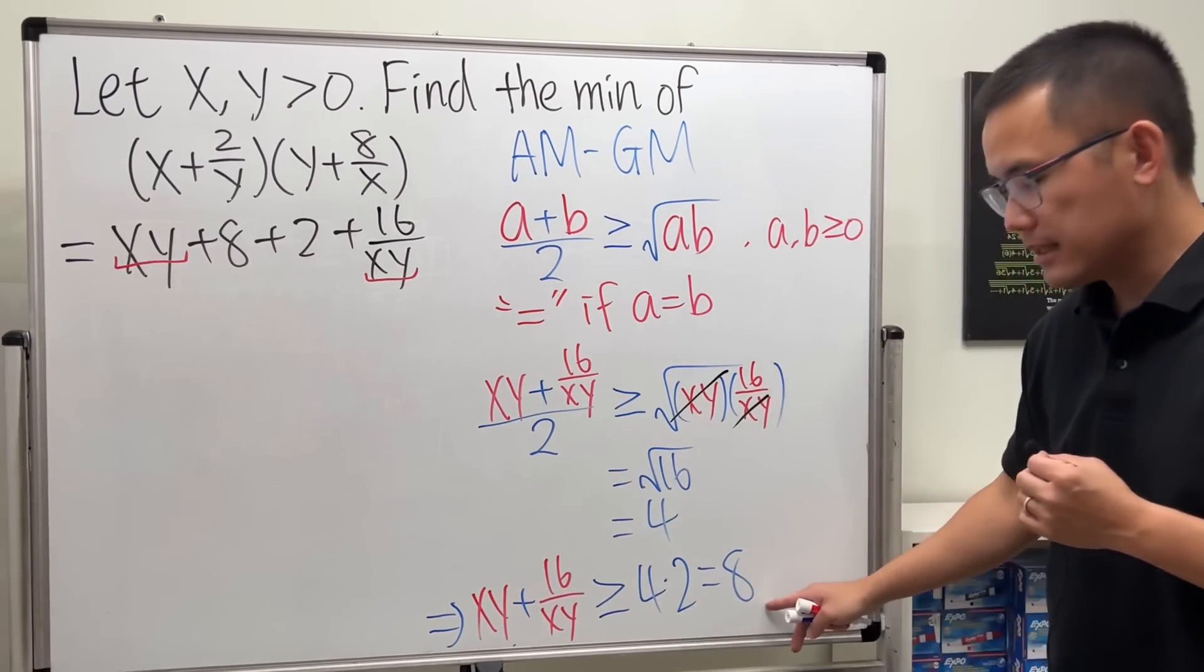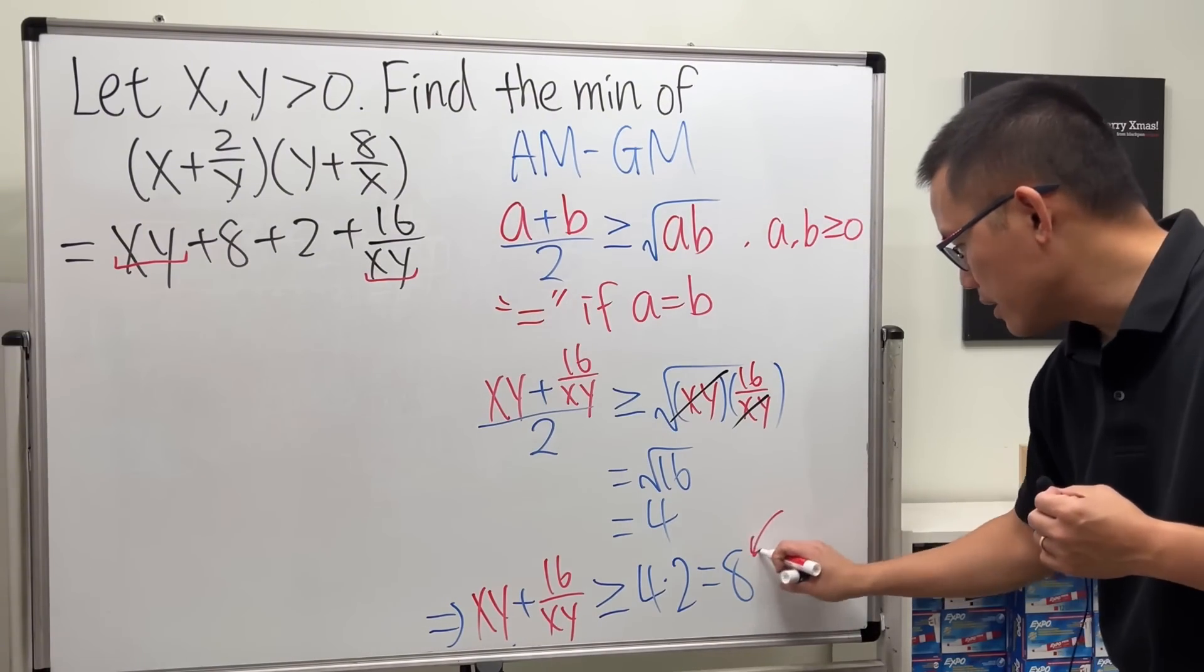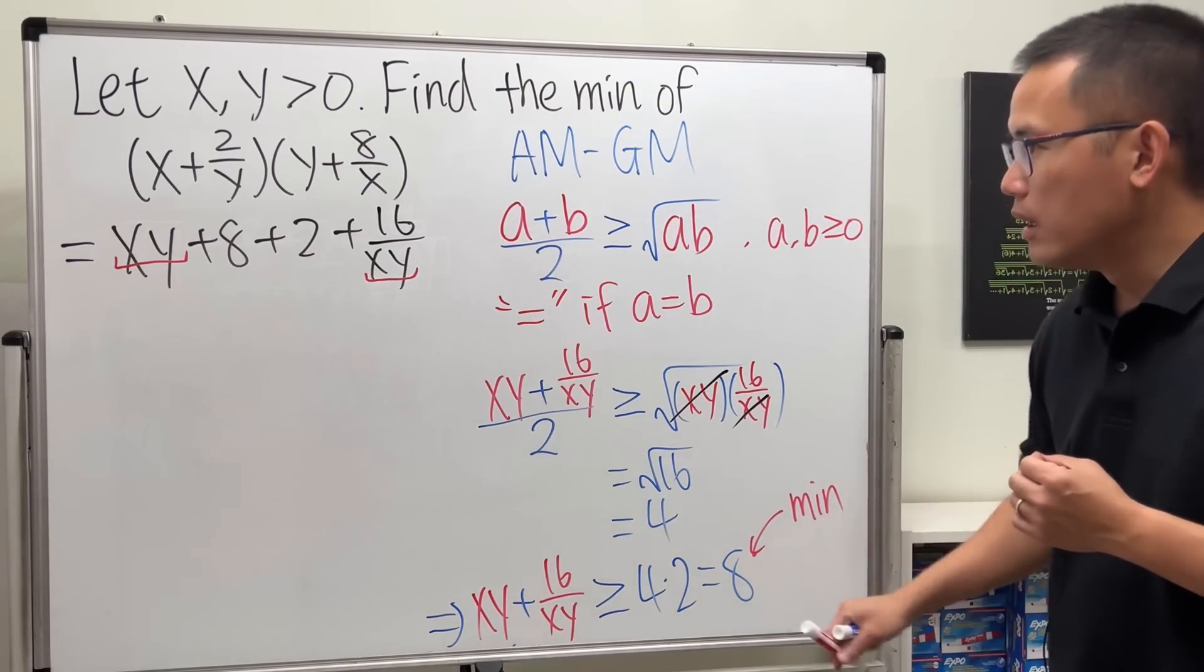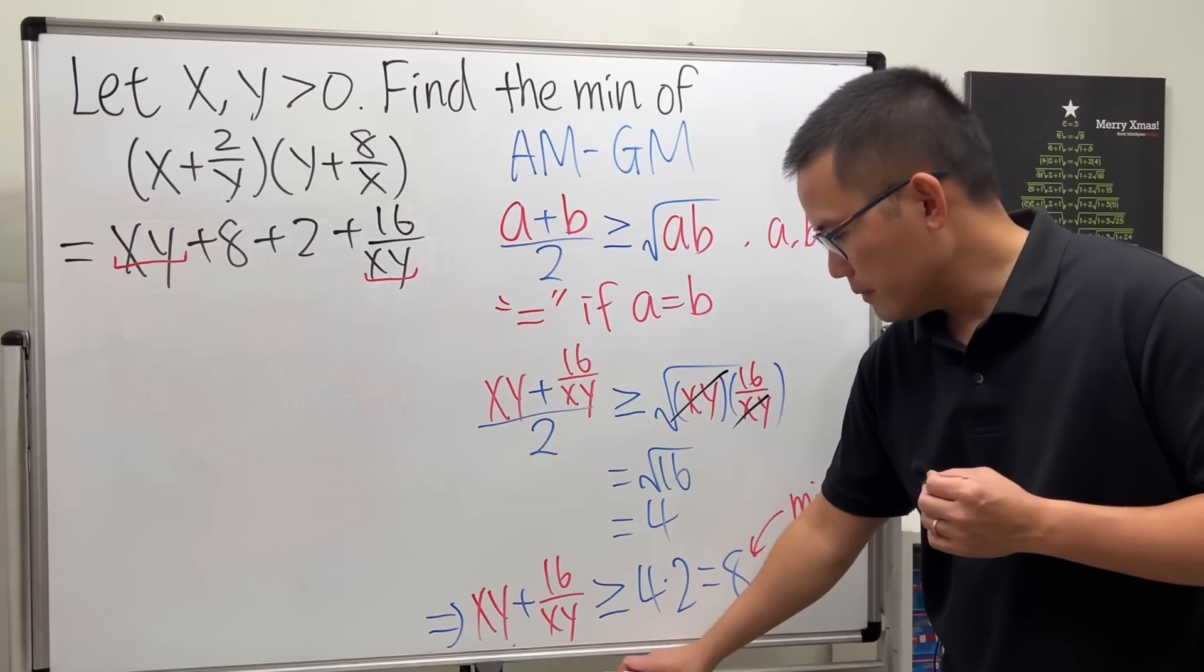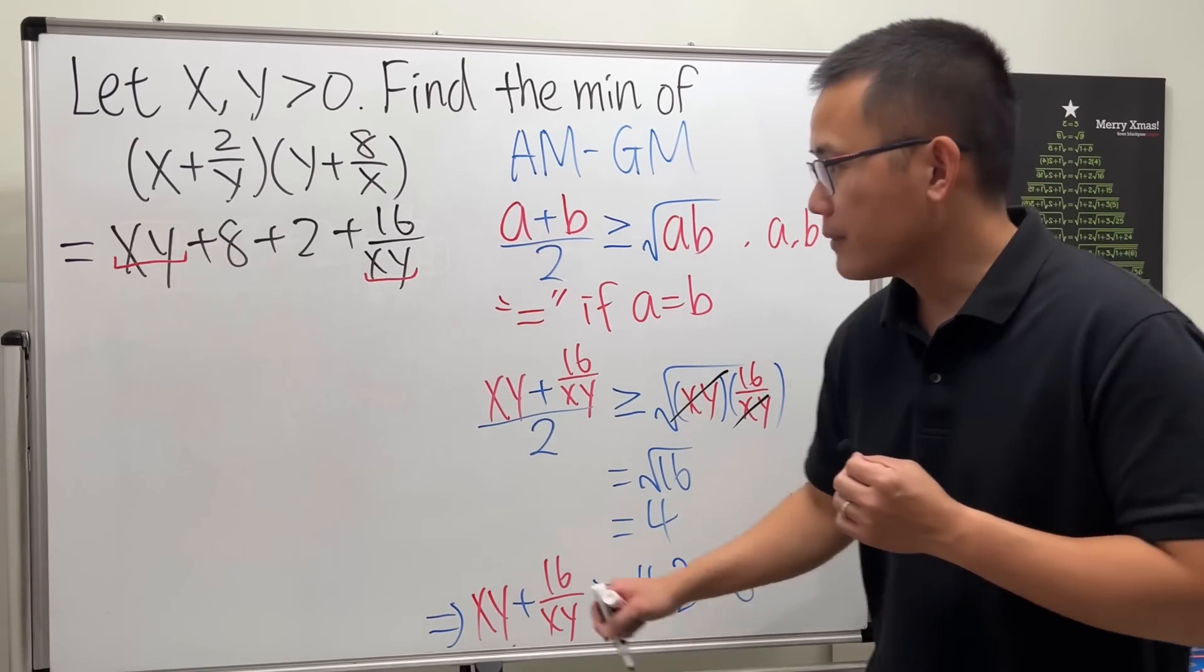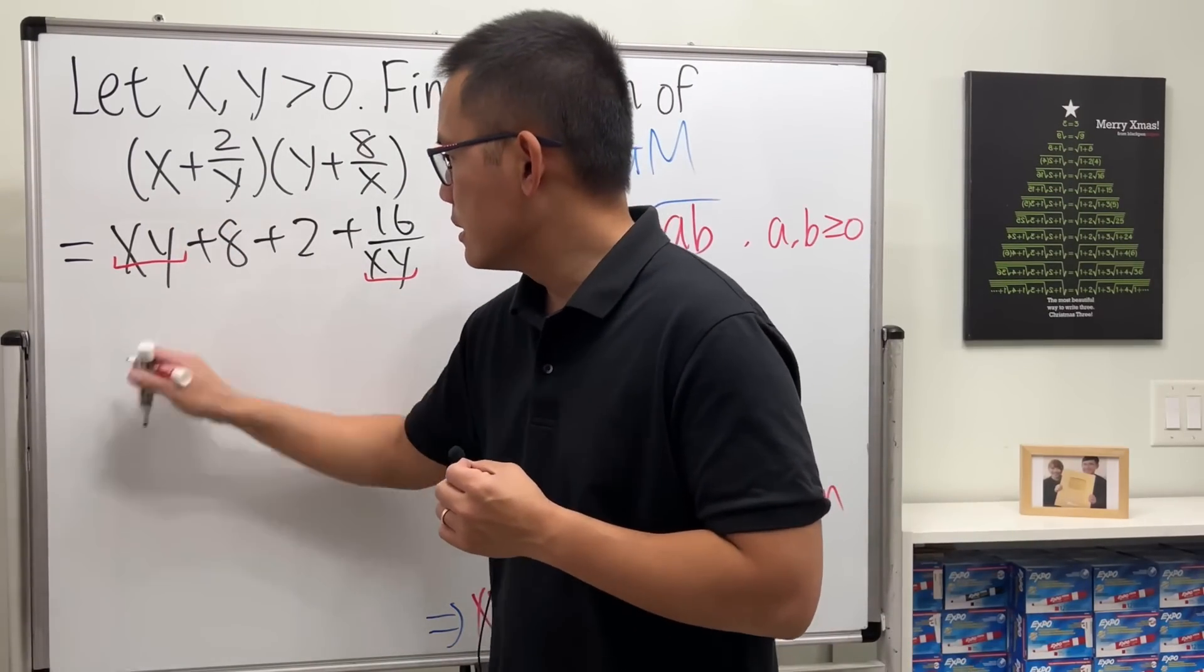And as you can see, this part is always going to be greater than or equal to 8. So that means this right here is the minimum of this tool.